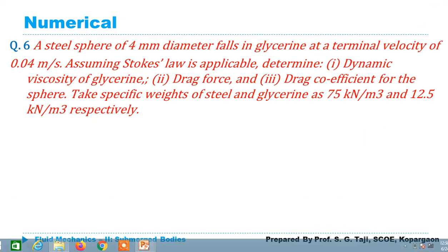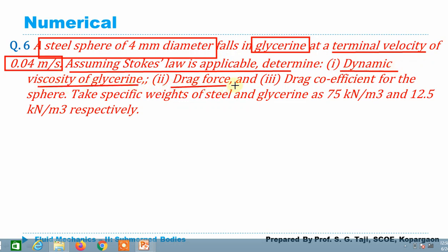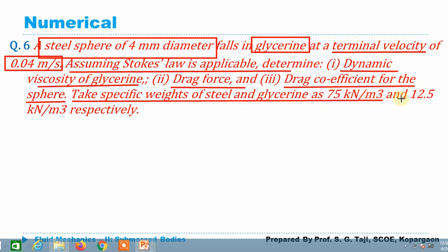The second numerical: a steel sphere of 4 mm diameter falls in glycerin at a terminal velocity of 0.04 m/s. Assume Stokes law is applicable, i.e., CD = 24/Re. Calculate: dynamic viscosity of glycerin (μ), drag force on the sphere (FD), and drag coefficient (CD). Specific weight of steel is 75 kN/m³ and of glycerin is 12.5 kN/m³.